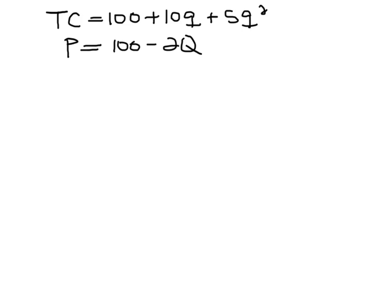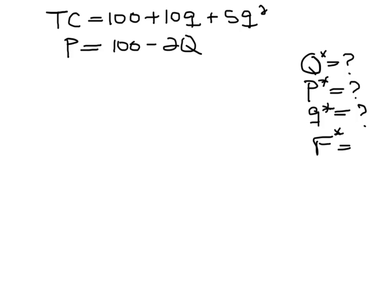Let's try to find that out now with the same cost function and demand curve. We are going to find the long-run equilibrium quantity, the long-run equilibrium price, the long-run equilibrium quantity at the firm level, and furthermore, how many firms will be in the long-run equilibrium. We know that right now we have 50 firms, so there's probably going to be less than 50 firms, but how many?